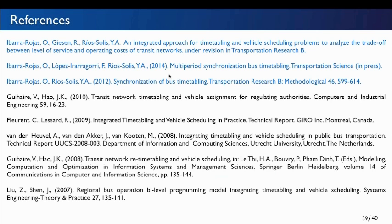At least for these specific transit network characteristics, we are able to see this trade-off — what happens if we use one more vehicle in terms of passenger transfers — which is information not available from previous approaches in the literature. We now have work to do with Transantiago, which has a database we can use to estimate accurate travel times and identify which planning periods are suitable for implementing this approach, given that some periods have very high frequencies.